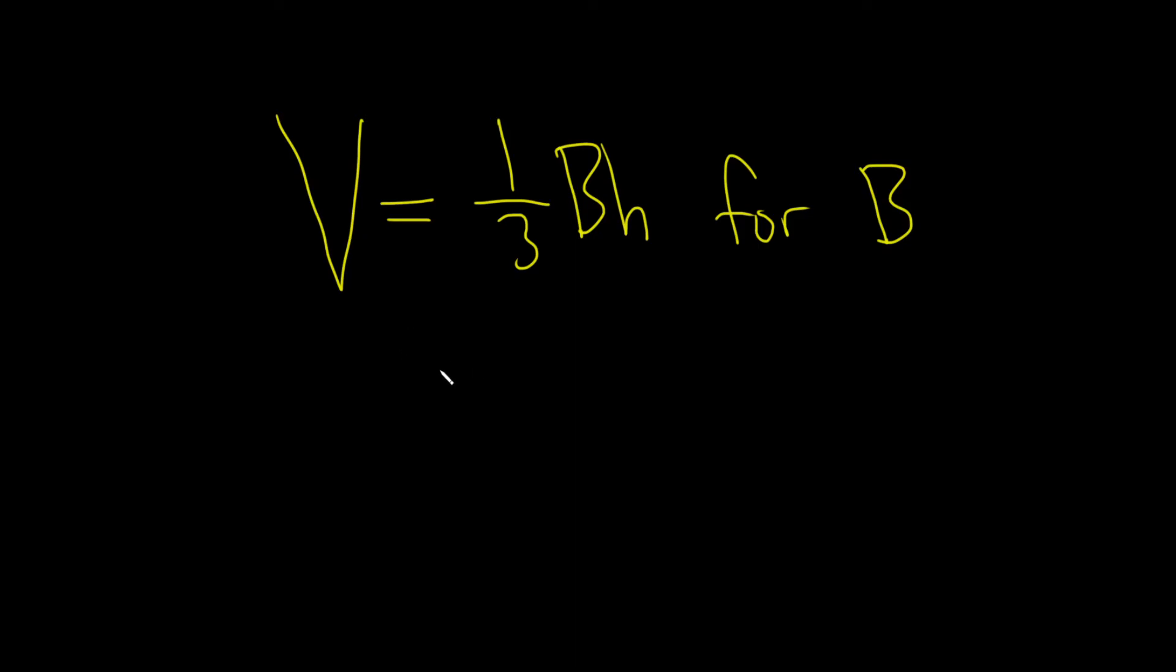In this problem, we have the equation v equals one-third bh, and we have to solve for b. So let's do it in two steps.